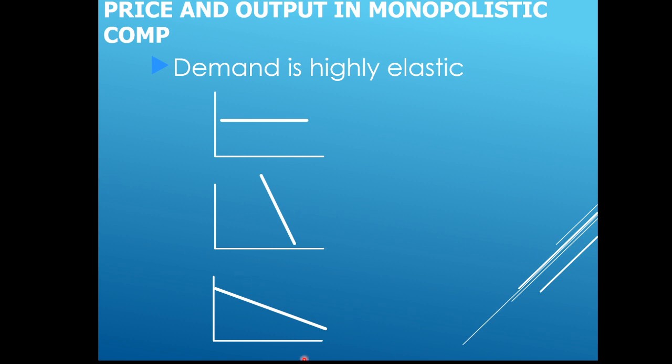The monopolistic competitor has a downward-sloping demand curve because they have some control over price. That pizza place in Brooklyn charges five dollars a slice; other pizza places in town can't charge five dollars a slice because they're not offering anything special.